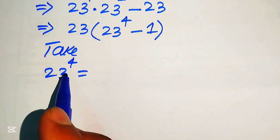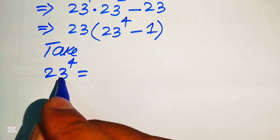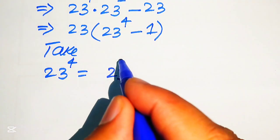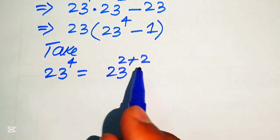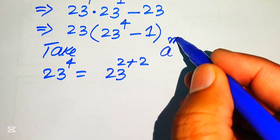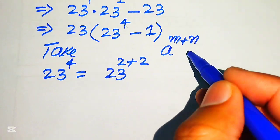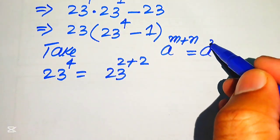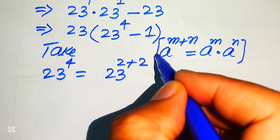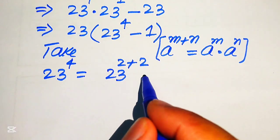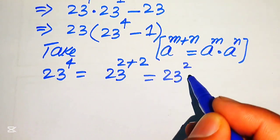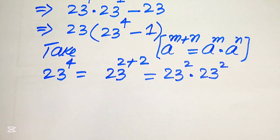We again focus on the exponent, which is 4, and we write it as 23 to the power of 2 plus 2, breaking 4 as 2 plus 2. Applying the exponent law again — a to the power of m plus n equals a to the power of m times a to the power of n — we break the exponents and write it as 23 squared multiplied by 23 squared.